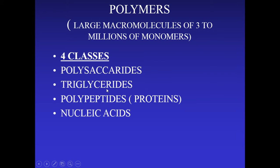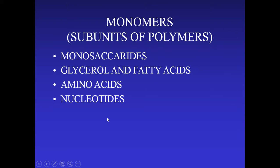Polypeptides or proteins are held together by peptide bonds linking amino acids. Nucleic acids contain monomers called nucleotides. The monomers are: monosaccharides for carbohydrates, glycerol and fatty acids for lipids, amino acids for proteins, and nucleotides for nucleic acids such as DNA, ATP, and RNA.